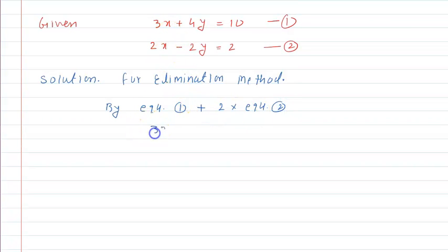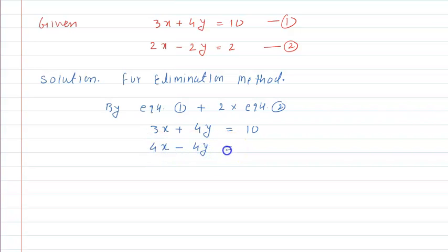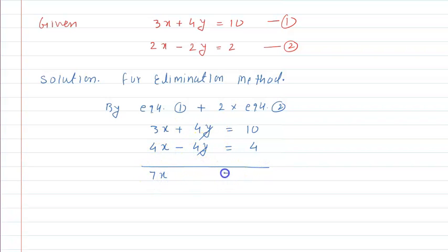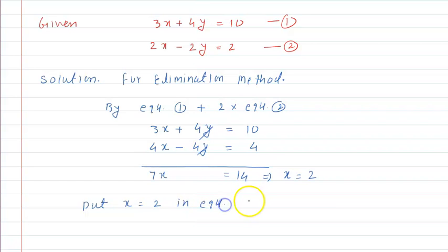Equation 1 is 3x plus 4y is equal to 10, and after multiplying equation 2 by 2, it becomes 4x minus 4y is equal to 4. Adding both equations, the y terms cancel out and we get 7x is equal to 14, which implies x is equal to 14 divided by 7, which is 2. So the value of x is 2.